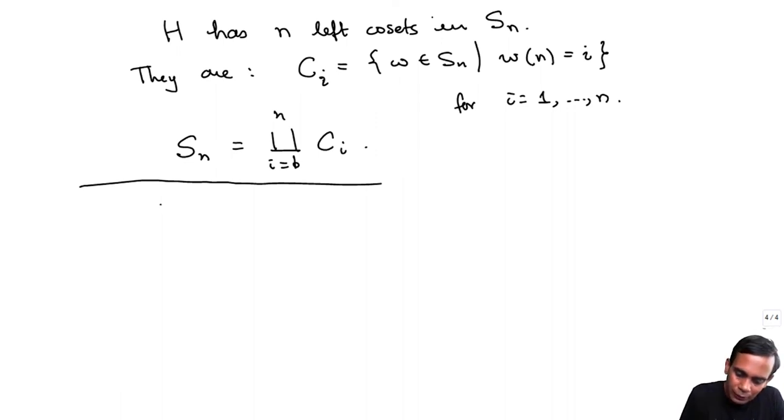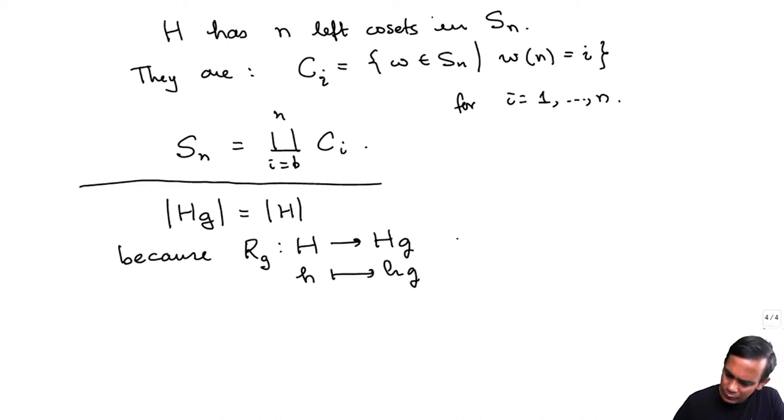So firstly, what is the size of a coset? What is the cardinality of h times g? So g is some element of G and h is a subgroup. I claim that this is the same as the cardinality of H, because you have a bijection from H to Hg, right multiplication by g from H to Hg. This function takes h to h times g, and it is a bijection.